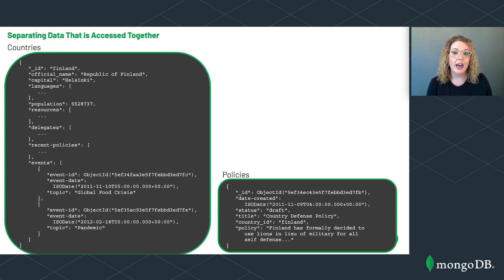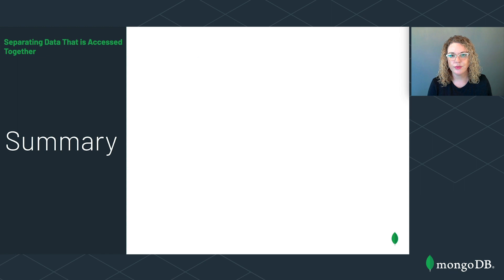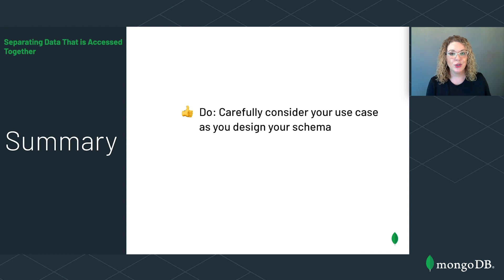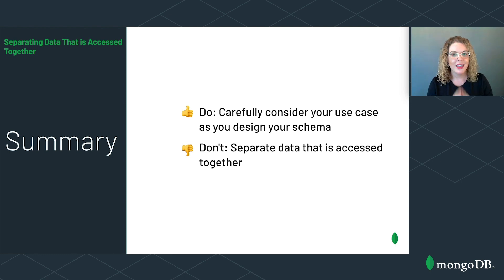Let's summarize what we did. We updated our schema from four collections down to two. We can now run our country report without combining information from more than one collection, so reports can be generated incredibly quickly. To summarize the anti-pattern: do carefully consider your use case as you design your schema, weigh the benefits and drawbacks of data duplication, and don't separate data that is accessed together. Data that is accessed together should be stored together. If you follow this rule of thumb, your queries will be incredibly speedy.